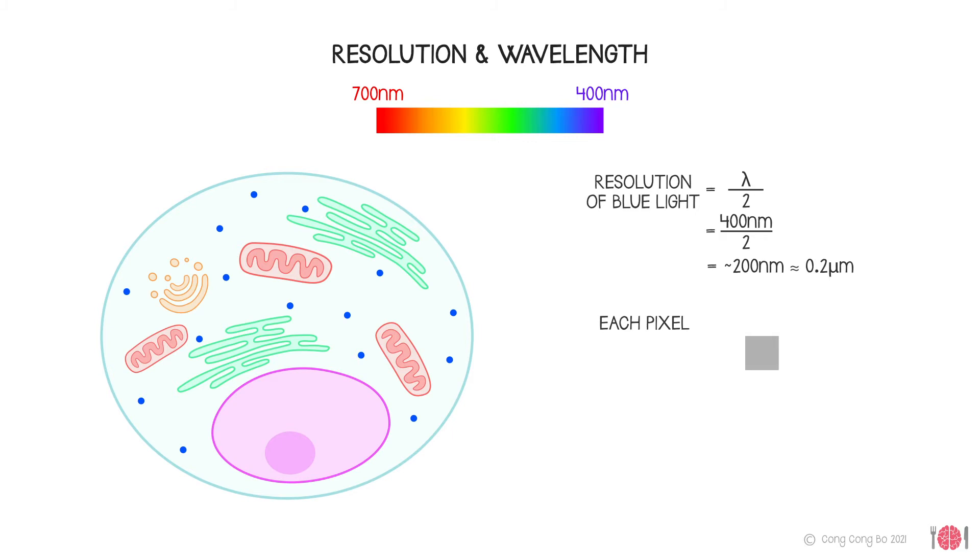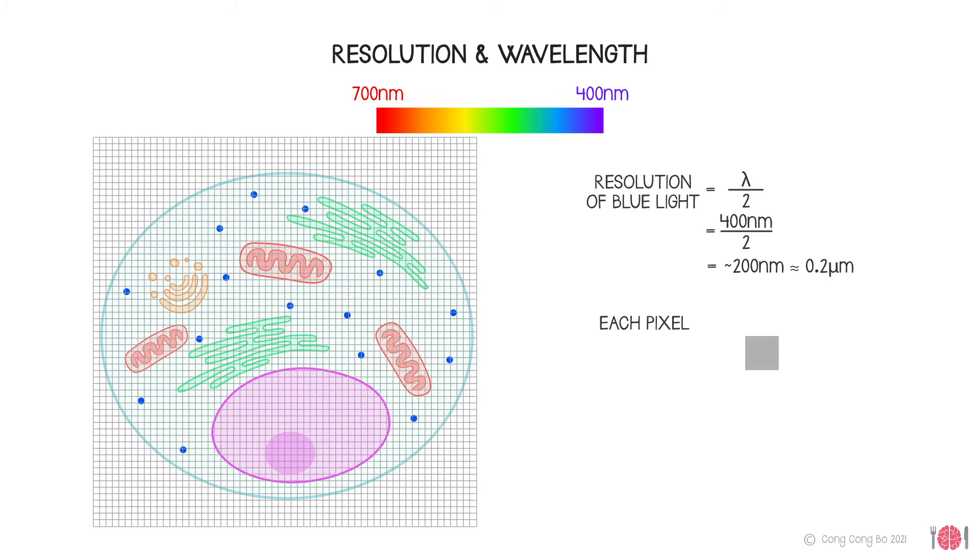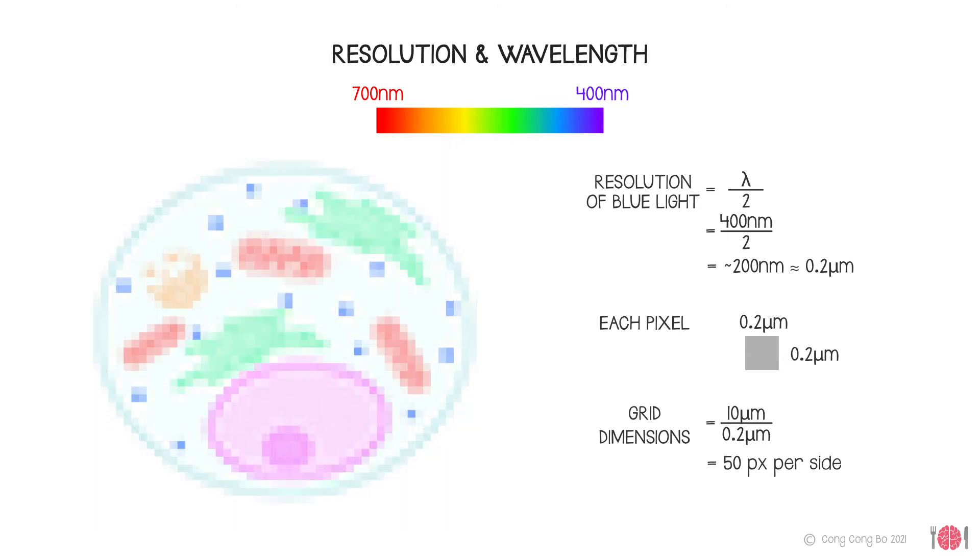To explain this, imagine superimposing a pixel grid on a cell where each pixel is 200 nanometers or 0.2 micrometers wide. Our animal cell is 10 micrometers wide, so we only have a grid of 50 by 50 pixels to represent this cell. This really doesn't give us a lot of detail.